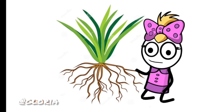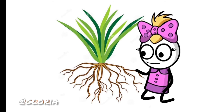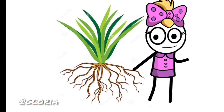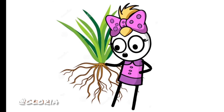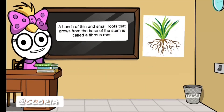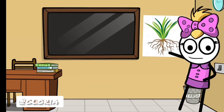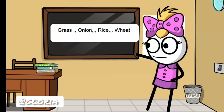Now look here. This is how a fibrous root looks like. Here we can see so many thin and small roots. A bunch of thin and small roots that grows from the base of the stem is called a fibrous root. We can see these fibrous roots in plants like grass, onion, rice, and wheat.